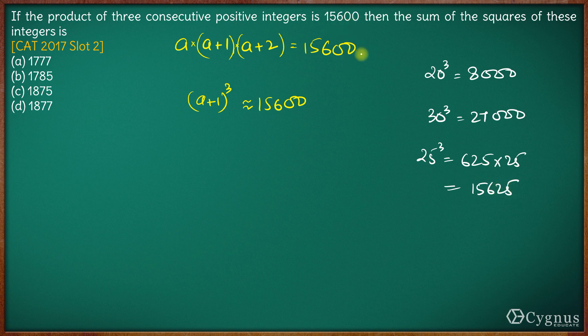So one of the numbers can be 25. So if a+1 is 25, then a can be 24 and a+2 can be 26.